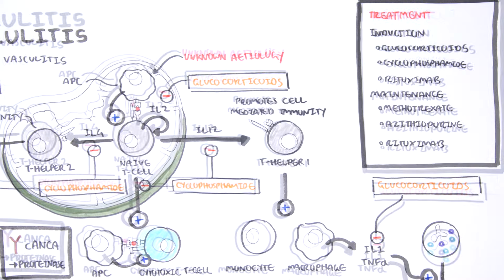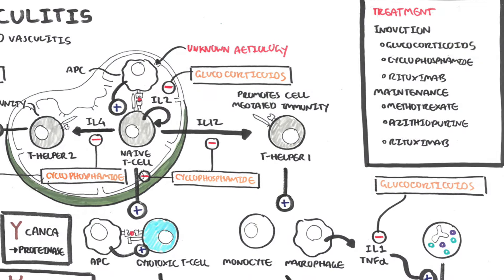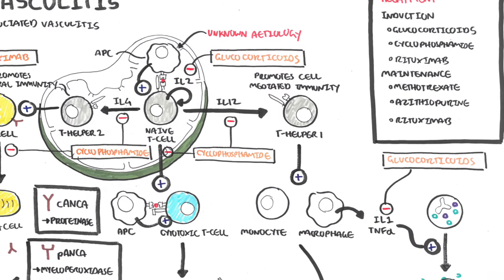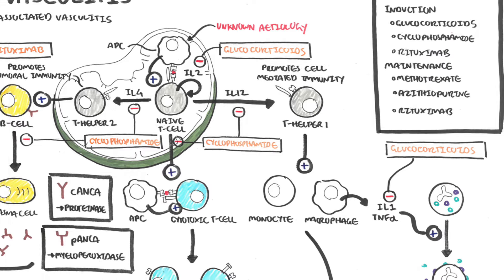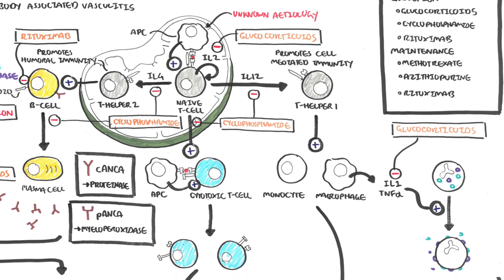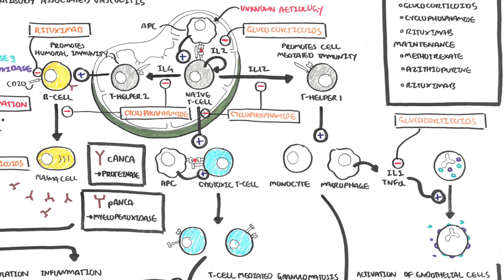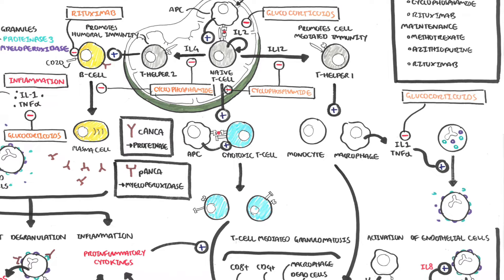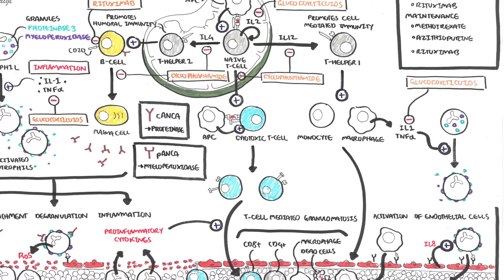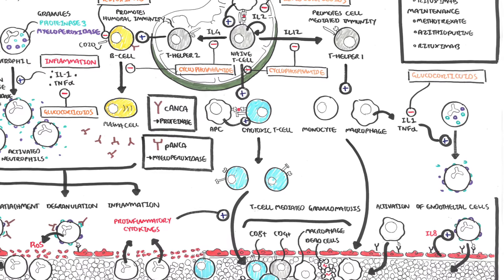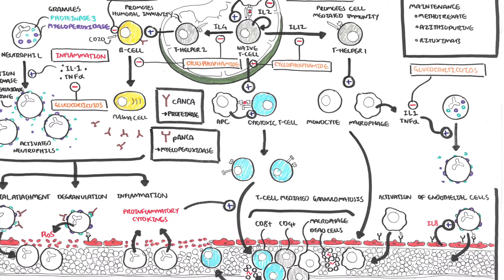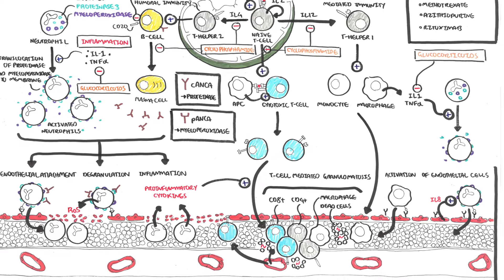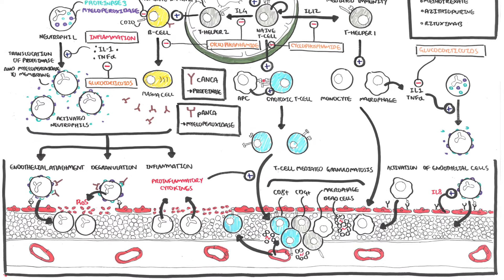Now that we have a bit of an idea about the pathophysiology behind ANCA-associated vasculitis, we can learn about the three types in more detail: microscopic polyangiitis, granulomatosis with polyangiitis, and eosinophilic granulomatosis with polyangiitis.